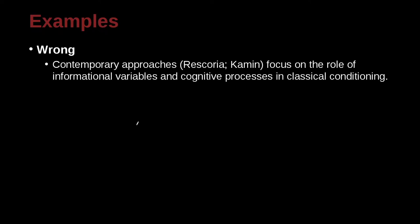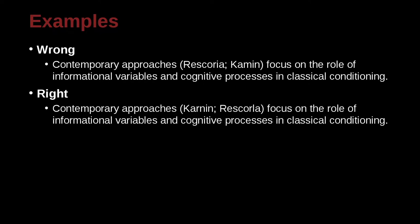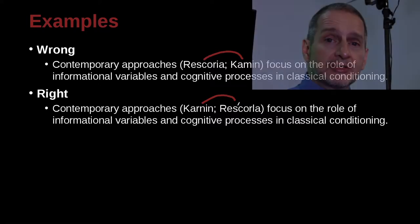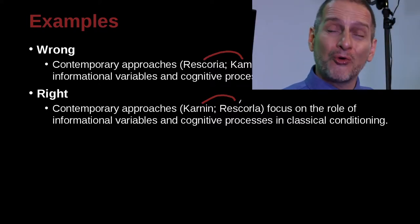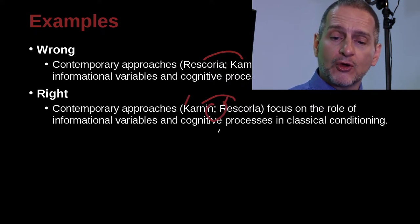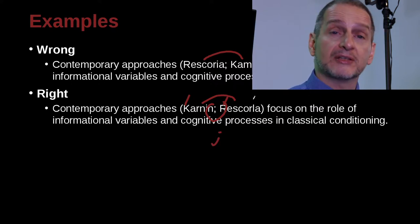Contemporary approaches — Frascura and Haman — focus on the role of informational variables and cognitive processes in classical conditioning. And here we have the problem of who goes first. In APA, we have rules about this: when you have multiple authors inside the same parenthetical, use alphabetical order — in this case, K comes before R. And don't forget the semicolon to separate the two separate sources.